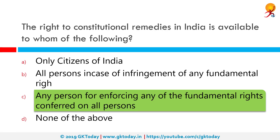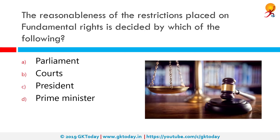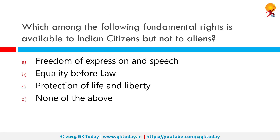The reasonableness of the restrictions placed on fundamental rights is decided by which of the following? The correct answer is the courts. The court is called upon to ascertain the reasonableness of the restriction and not of the law which permits the restriction. A law may be reasonable but the restriction imposed by it on the exercise of freedom may not be reasonable.